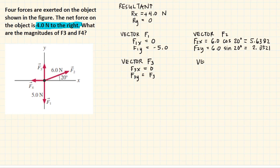For vector F4, F4 is directed to the left. So the horizontal component is negative F4 — whatever the magnitude of F4 is, we take the negative of that. And F4y is zero because there is no vertical component since it is directed to the left.